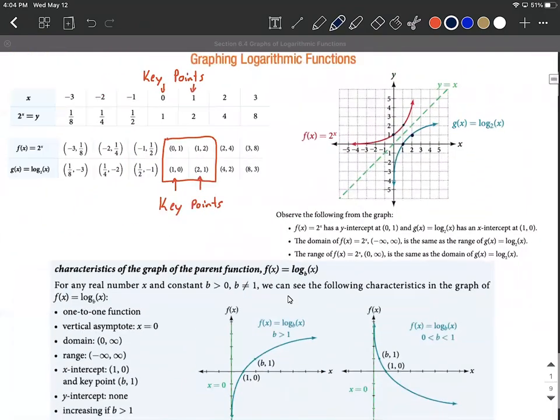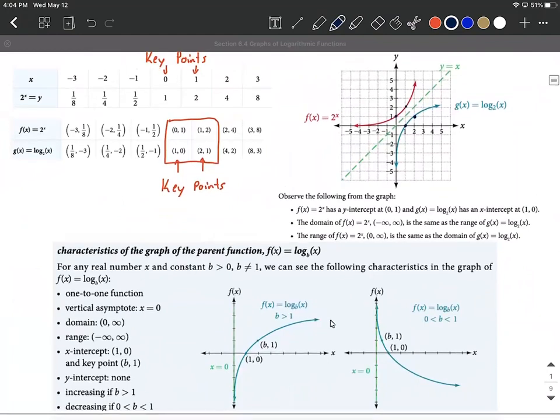Some other things to mention on these are just about the domain and range that they invert from one another based on exponential function and logarithmic function. So the domain of logarithmic functions is just going to be positive values, from 0 to infinity. Also you can think to yourself we're only allowed to plug positive values into the function. So whatever's on the inside of the function you want to make sure that's greater than 0 or positive.